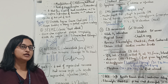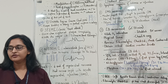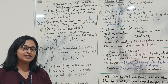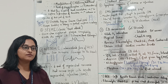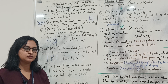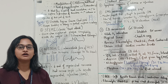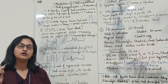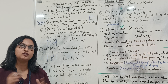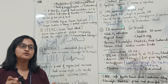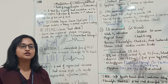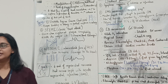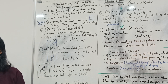Calcification is the build-up of calcium in the body. There are two types: dystrophic calcification, which results from accumulation of calcium in injured tissues, and metastatic calcification, which is accumulation of calcium in normal tissues.